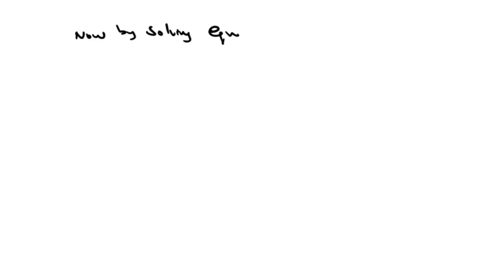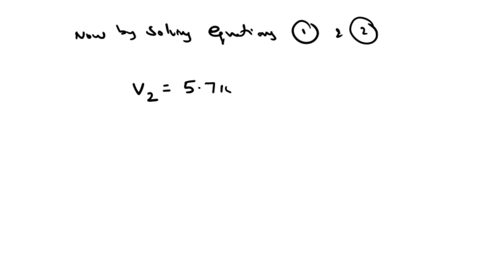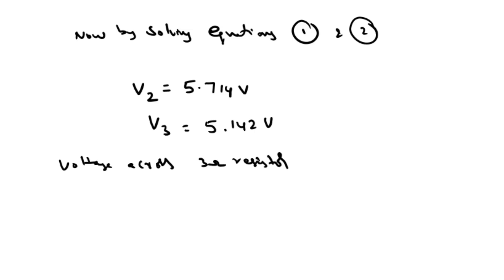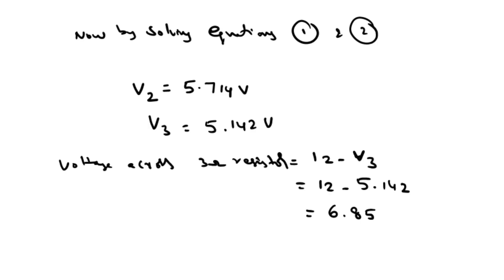By solving equations 1 and 2, V2 equals 5.714 volts and V3 equals 5.142 volts. To find the power, we first find the voltage across the 3 ohm resistor, which is equal to 12 minus V3, equals 12 minus 5.142, which equals 6.858 volts.